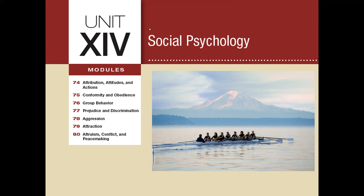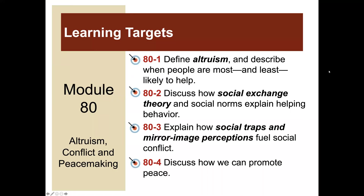Welcome to Unit 14, Social Psychology, Module 80, the last module: Altruism, Conflict, and Peacemaking. This recording aligns with Myers' Psychology for the AP Course Third Edition textbook. There are four learning targets: define altruism and describe when people are most and least likely to help; discuss how social exchange theory and social norms explain helping behavior; explain how social traps and mirror image perceptions fuel social conflict; and discuss how we can try to promote peace.